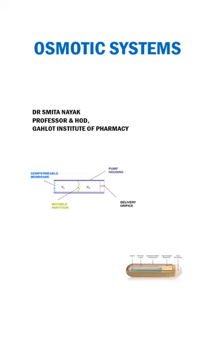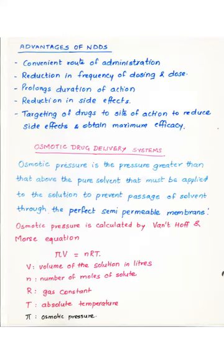The osmotic system mainly consists of three components: a delivery device, a core, and a semi-permeable membrane. An osmotic DDS is a type of novel drug delivery system and it possesses all the advantages of a novel drug delivery system.